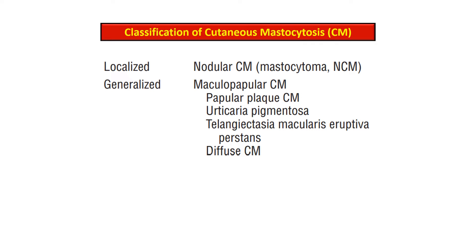Ten percent of mastocytosis cases are of systemic variety, while cutaneous mastocytosis is classified as localized or generalized. The localized entity is nodular cutaneous mastocytoma, also termed mastocytoma or nodular cutaneous mastocytosis. The generalized variety includes maculopapular cutaneous mastocytosis, papular-plaque cutaneous mastocytosis, urticaria pigmentosa, telangiectasia macularis eruptiva perstans, and diffuse cutaneous mastocytosis.